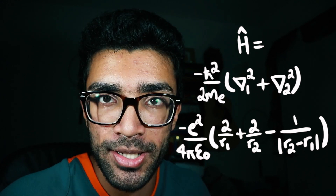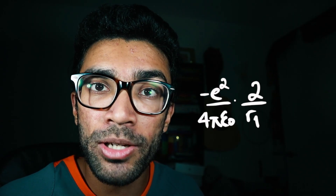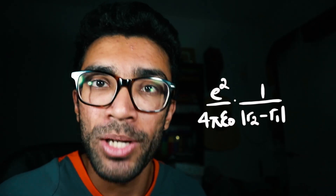It contains the following terms: the kinetic energy of the first electron, the kinetic energy of the second electron, the electrostatic attraction of the nucleus to the first electron, the same with the second electron, and the electrostatic interaction between the two electrons. And remember, this model is so oversimplified that it doesn't even begin to take into account anything happening in the nucleus. We also haven't considered the electron spins, the proton spins, and so on.